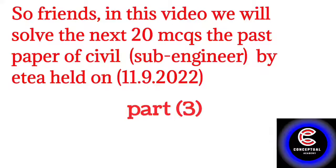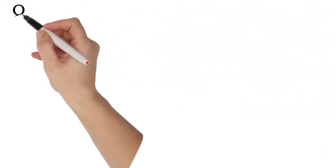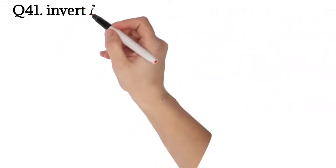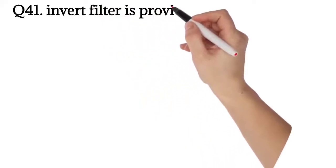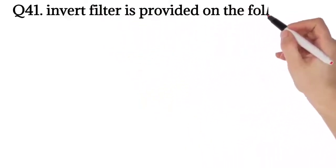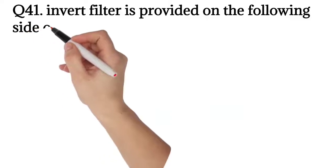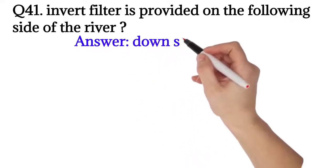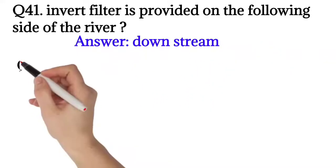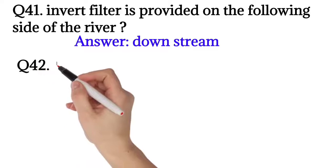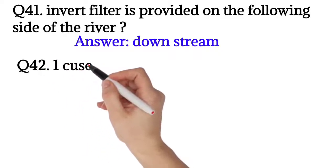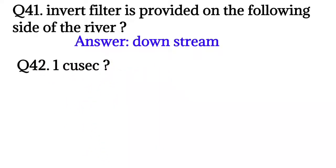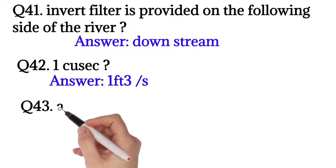We start from question number 41. Invert filter is provided on the following side of the river. The answer is downstream. Question number 42: 1 cusec is equal to? The answer is 1 cubic feet per second.